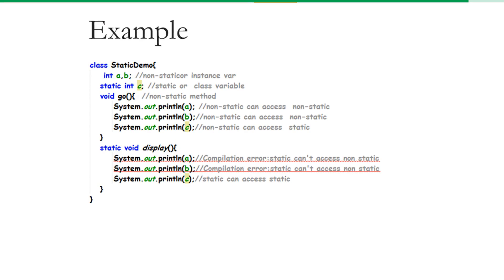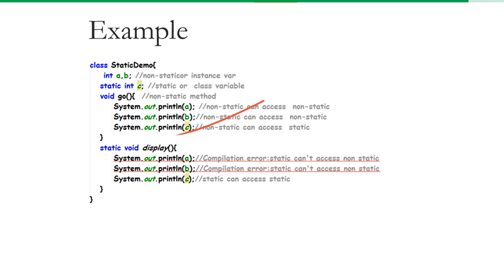Here is a small example demonstrating the difference between non-static and static. I have declared two variables, a and b, which are both non-static, and here is a static variable c. Inside the go() function, which is non-static, I am printing the values of a, b, and c. Since go() is non-static, it can access both non-static variables a and b as well as static variable c — there is no problem.